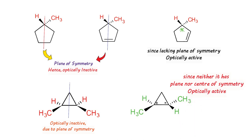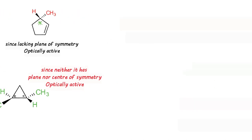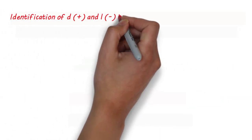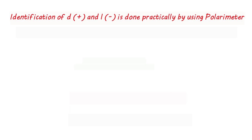Now, once an optically active compound shows optical isomerism, one among them will be a dextro isomer and the other, which is its mirror image, will be a levo isomer. So how can you tell whether a molecule is dextro or levo?